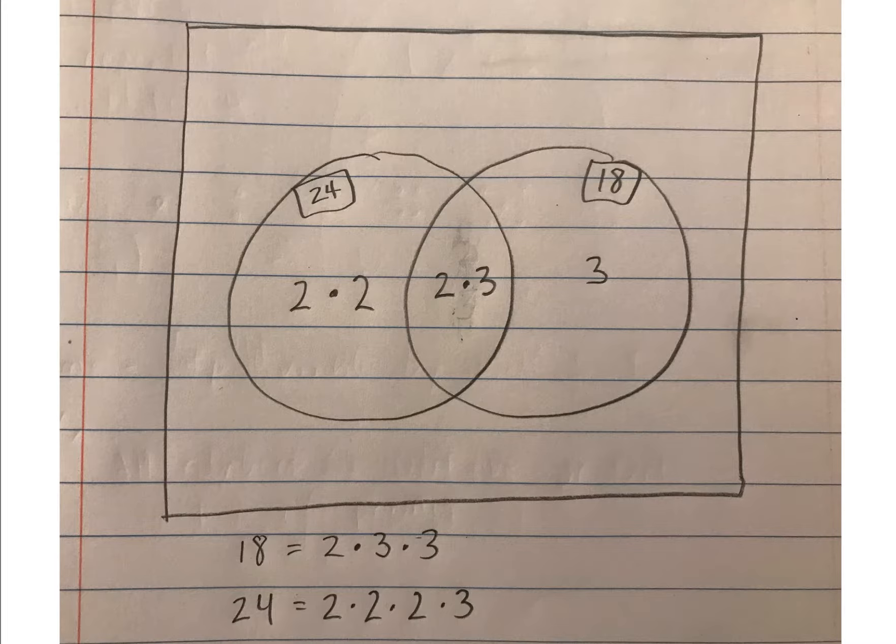We can also put these into a Venn diagram and we can see that in the overlap they share a single 2 and a single 3. 24 has two more 2s and 18 has one more 3.